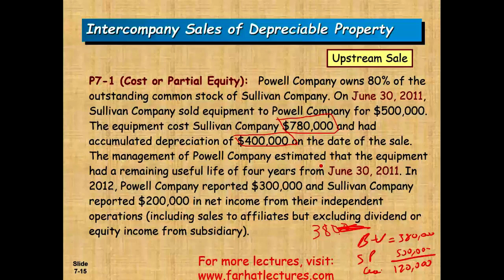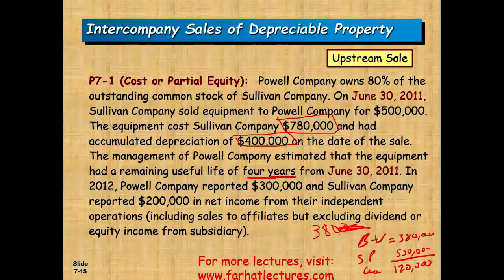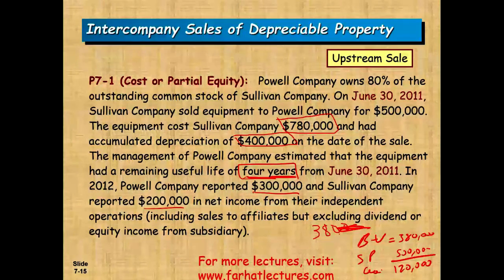P Company estimated the equipment has a remaining life of four years from June 30th, so depreciation will be based on four years. In 2012, P Company reported $300,000 and S Company reported $200,000 in net income from their independent operations, including sales to affiliates but excluding dividends or equity income from the subsidiary.